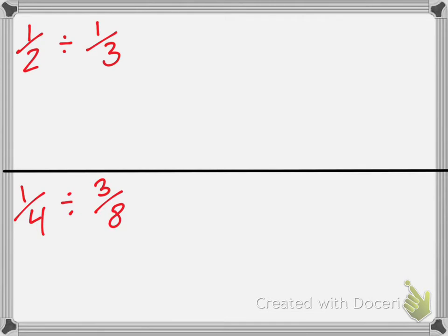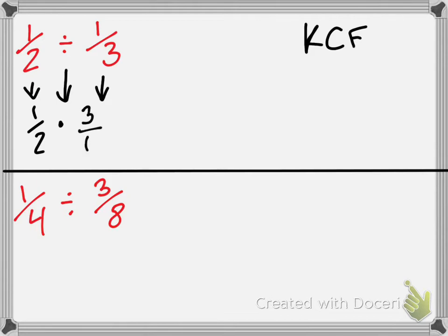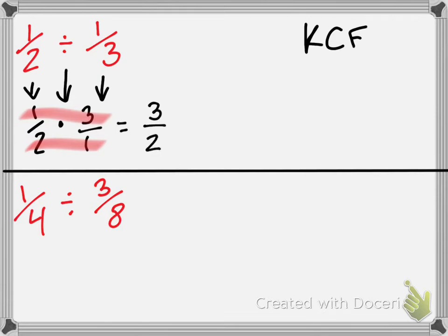I want you guys to solve these problems. First things first, we do our keep, change, flip — our Kentucky Chicken Fried. We keep one-half, we change this to a multiplication sign, and Delaney, what do we change one-third to? Three over one. Perfect. Can I cross-cancel this one? No — this is already simplified. One and one, and two and three are not divisible by the same thing. So we cross-multiply and get three over two.